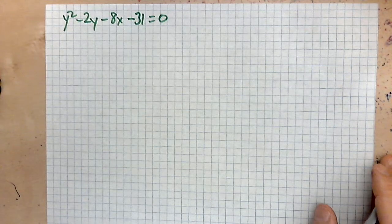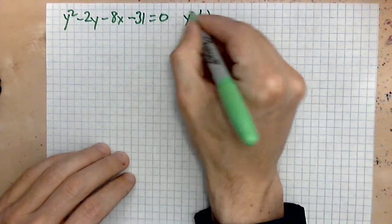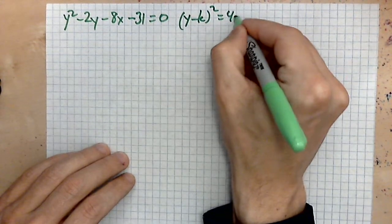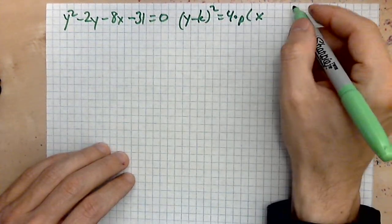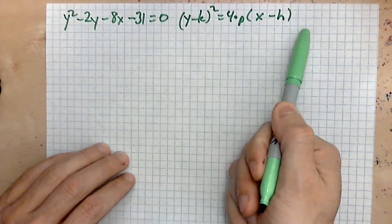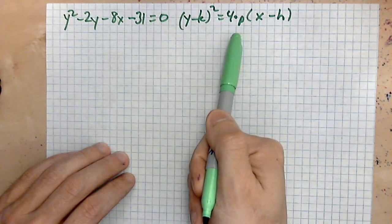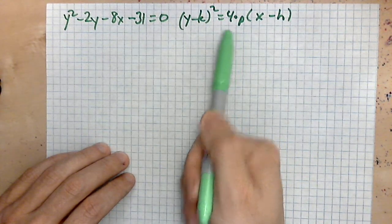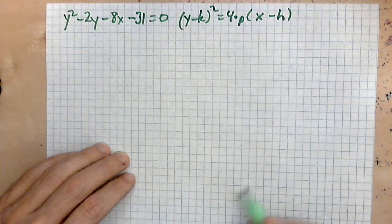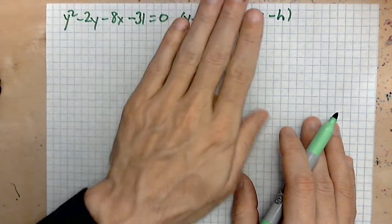We want to transform it so that it looks like this: (y - k) squared equals four times p, and then (x - h). This is the form that reveals the vertex, the p, and from those pieces of information you can write down the focus and the directrix.